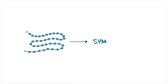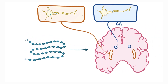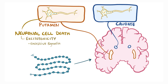The specific way in which extra glutamine causes HD symptoms isn't fully worked out, but some clues are that the mutated protein aggregates within the neuronal cells of the caudate and the putamen of the basal ganglia, causing neuronal cell death. Cell death might be related to excitotoxicity, which is excessive signaling of these neurons, which leads to high intracellular calcium.